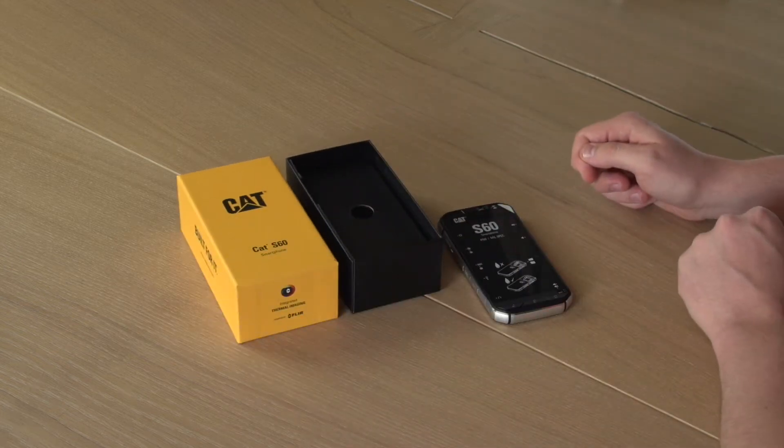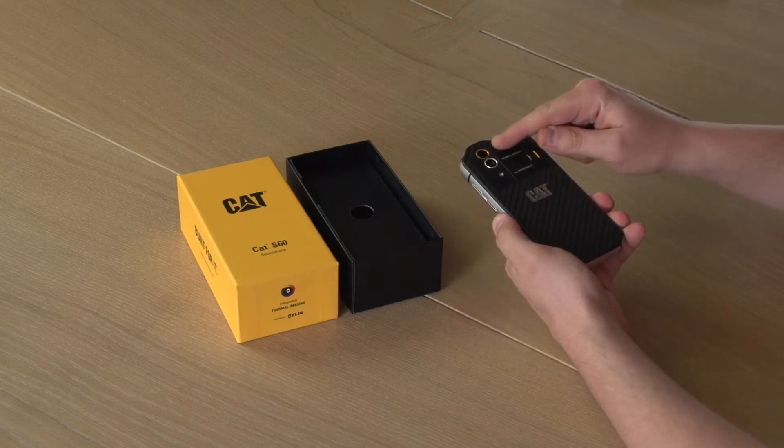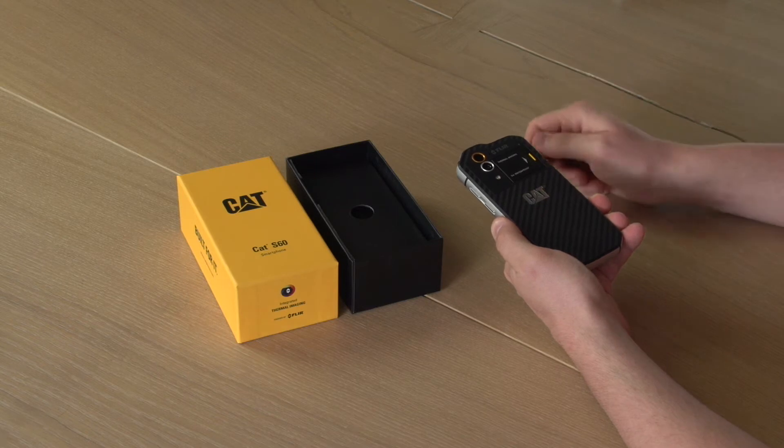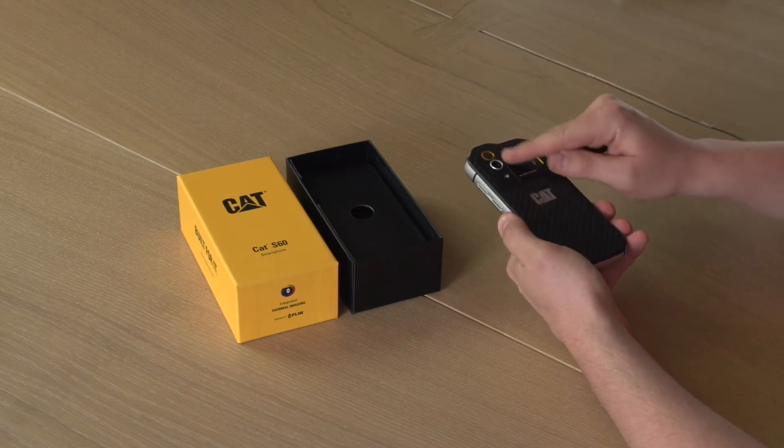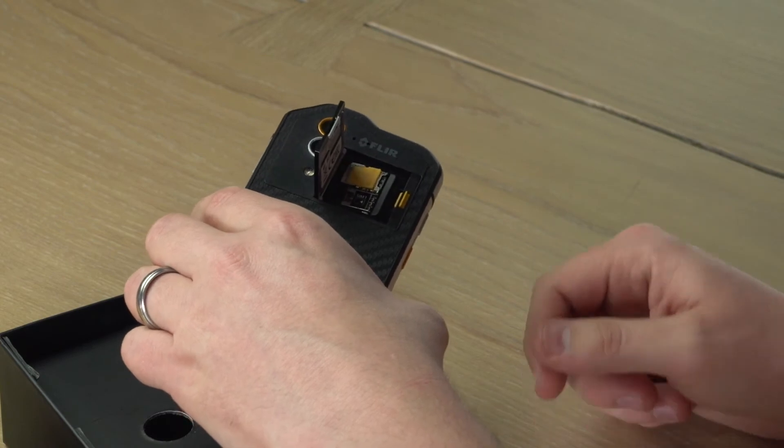This of course is the world's first smartphone with integrated thermal imaging and you can see the FLIR sensor on the back of the device here alongside the 13 megapixel camera. We've also got the door on the back of the device under which we insert the SIM and micro SD card.